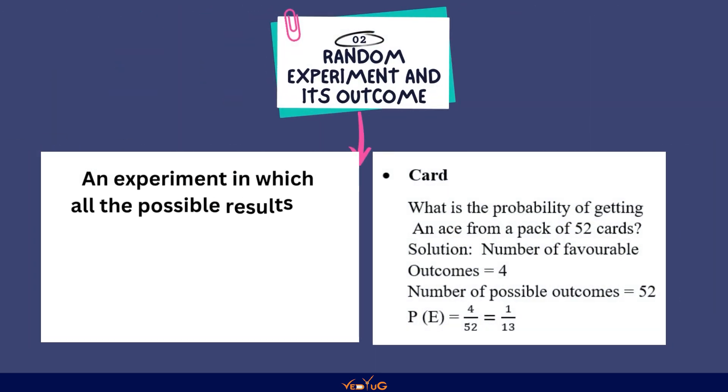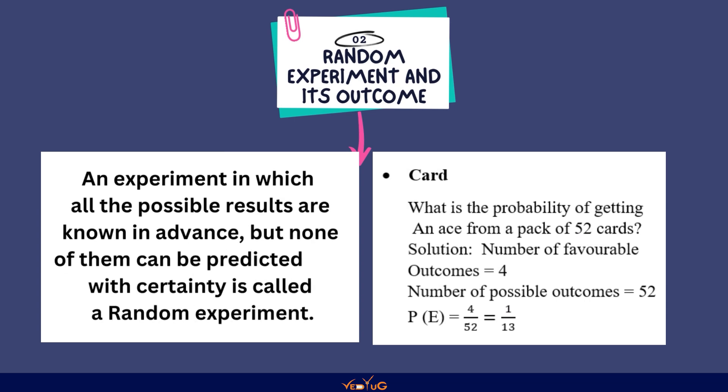Random experiment and its outcome. Random experiment is an experiment in which all the possible results are known in advance, but none of them can be predicted with certainty. This is called a random experiment. ये था random experiment का definition.